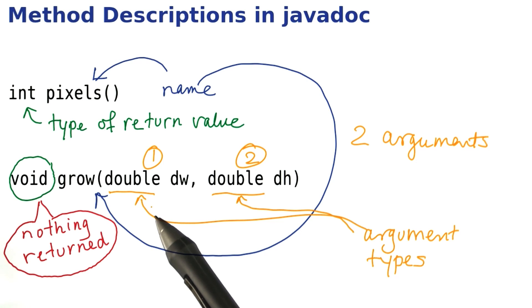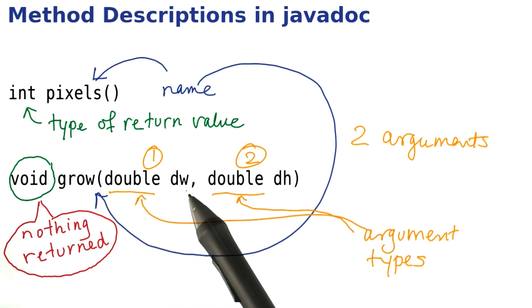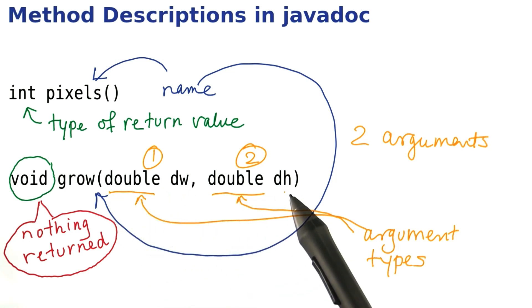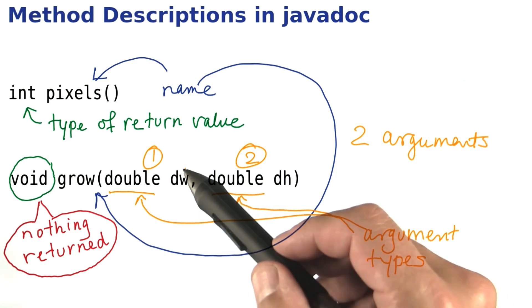Now, actually, and that's a minor detail that you don't really need to think about until the next lesson. What you see inside here, the double dw and the double dh, are themselves variable declarations. They declare two variables that are called the parameter variables.